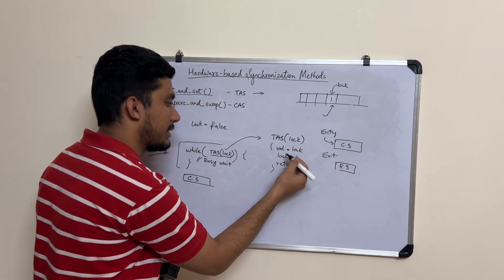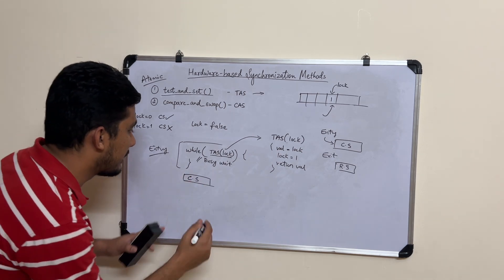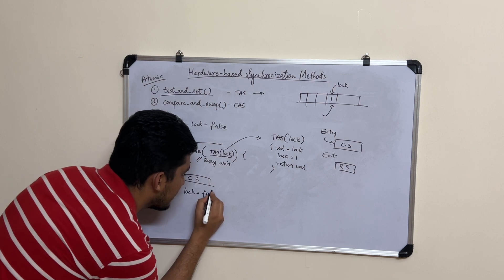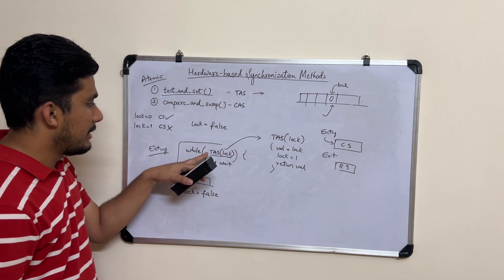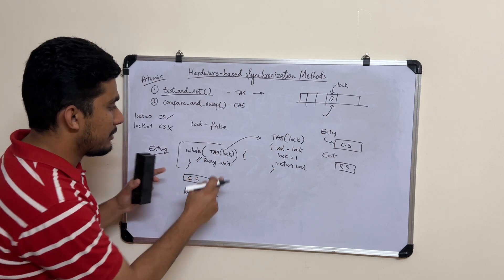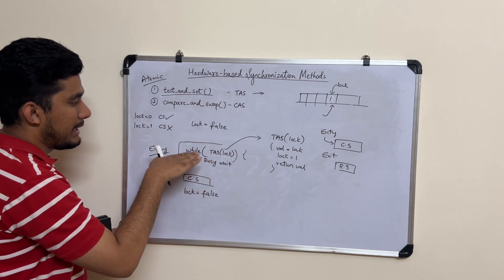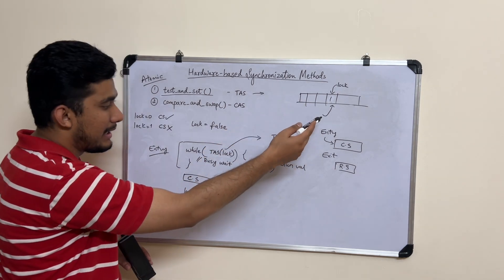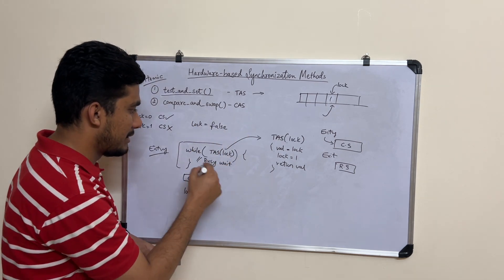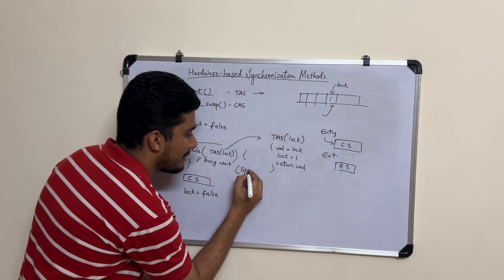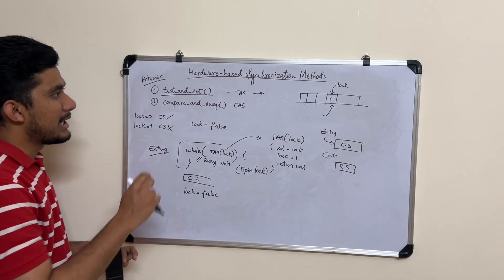Once the first process completes the critical section, it comes out and sets the lock value to false in the exit section. As soon as lock is false, any other process in busy-wait will call TAS again — it returns the old value (false), sets the lock to true, and that process now enters the critical section. This busy-waiting is also called a spin lock, because the process is spinning around a lock. That is how test-and-set achieves process synchronization.